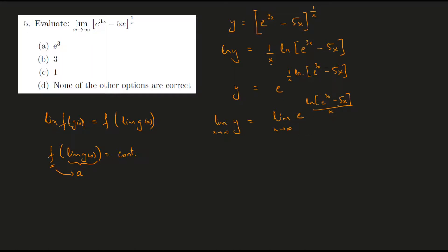And it just so happens that e to the power of anything—the exponential function itself—is going to be continuous everywhere. So I can rewrite this as e to the power of limit of the log of e to the power of 3x minus 5x upon x.